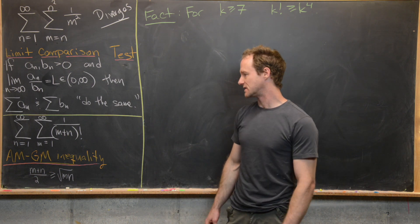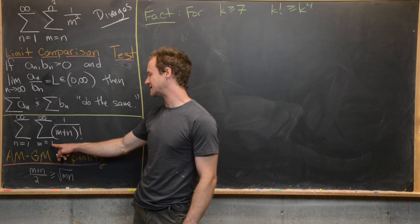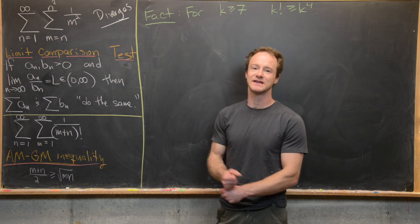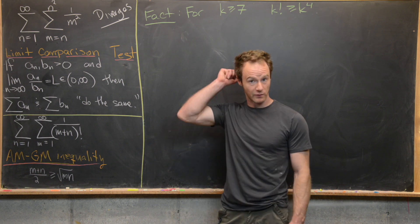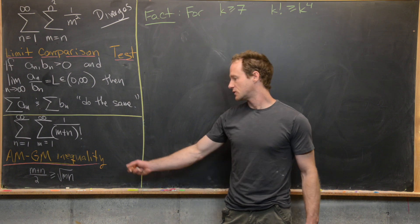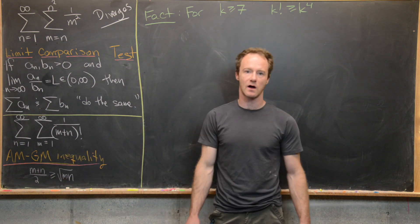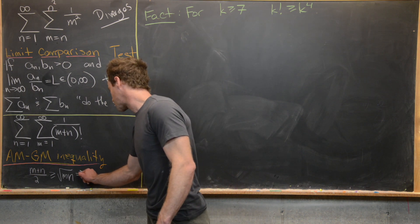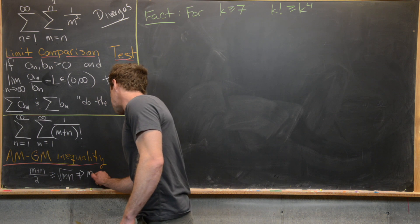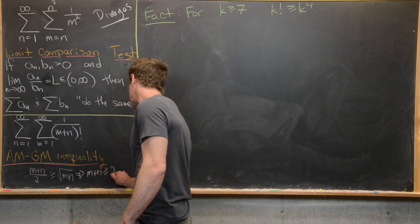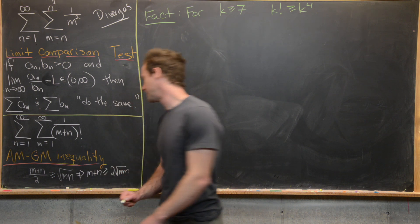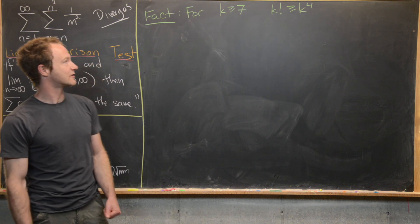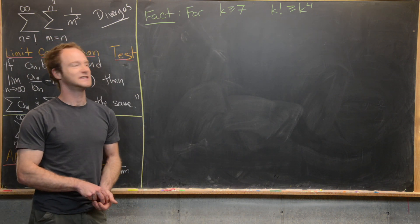Now let's get started on this second double sum. We have the sum as n goes from one to infinity and then the sum as m goes from one to infinity of one over m plus n factorial. It looks like this one might converge because if we had a single sum of this form, it would obviously converge to something having to do with the number e. We're going to make use of the arithmetic-geometric mean inequality, which says that m plus n over 2 is bigger than or equal to the square root of m times n, equivalently m plus n is bigger than or equal to 2 times the square root of mn. Another fact we'll use is that for k bigger than or equal to 7, k factorial is bigger than k to the fourth. You can check this with induction.